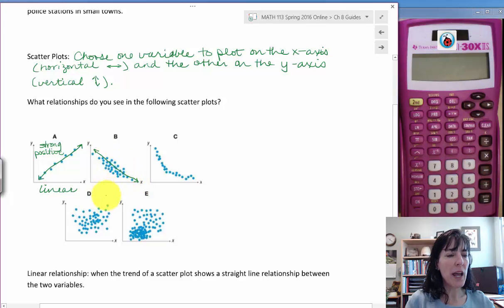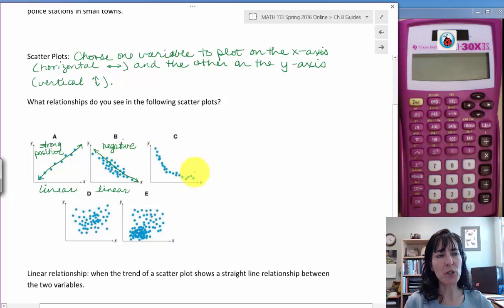This one we would also call linear because a straight line comes pretty close. But it's going in the opposite direction. The slope of the line itself, as you look left to right across the graph. From left to right, this one's going up, that's why we're calling it positive. And this B graph, as we go left to right, is heading downward, so we call this one a negative relationship between the two variables.